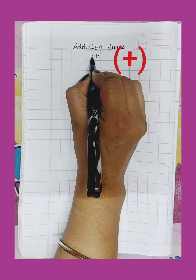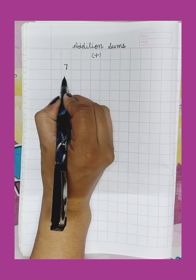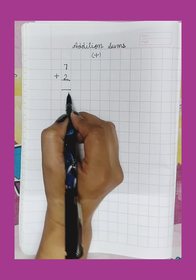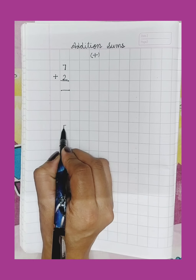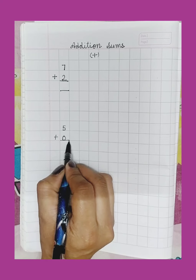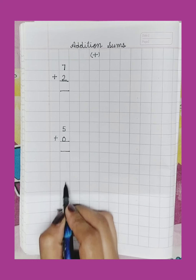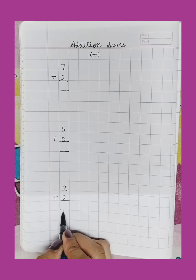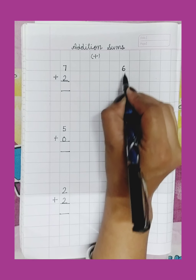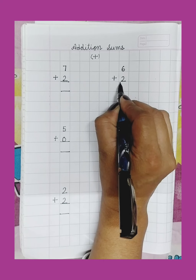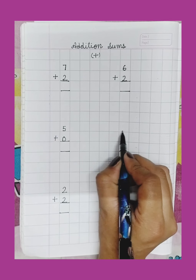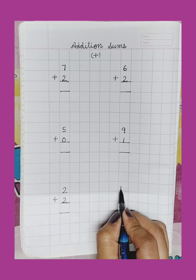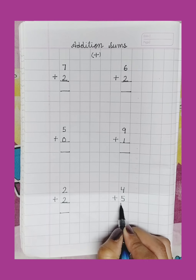This is the sign of addition. Let's start. Write here: number 7, number 2 plus — leave 2 or 3 boxes — write here 5. Here 0 plus, leave 2 or 3 boxes, write here number 2. Again number 2 plus write here number 6. Here number 2 plus write here number 9. Number 1 plus write here number 4. Here number 5 plus...